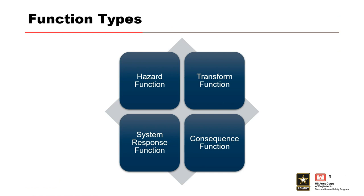RMC Total Risk contains four function types similar to what you learned in Module 1. Hazard functions describe exceedance probabilities of various hazard levels — examples include peak flow frequency, reservoir pool stage frequency, and seismic hazard curves. Transform functions convert hazard levels from one type to another, such as converting peak flow frequency to stage frequency using a flow-to-stage rating curve. System response functions describe the conditional probability of failure for various hazard levels, and consequence functions describe the consequences of failure or non-failure. The required functions for a risk analysis are hazard, system response, and consequence; transform functions are optional.